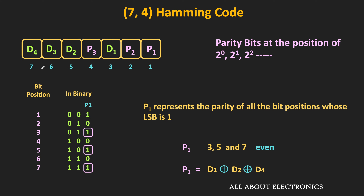The output of the XOR function is 1 when the number of 1s in the input is odd. That means when the number of 1s in those 3 bits is odd, the parity bit will be set to 1, so that the overall parity of the 4 bits remains even.